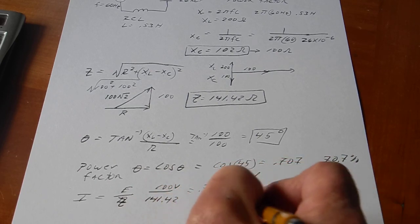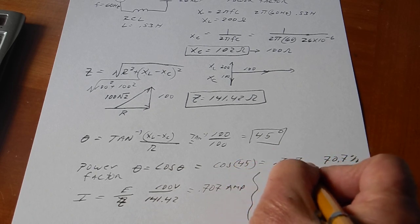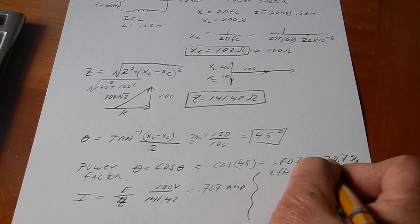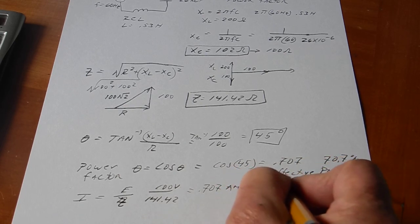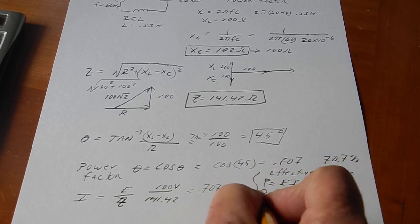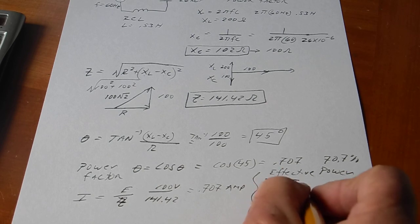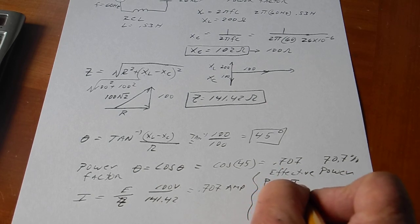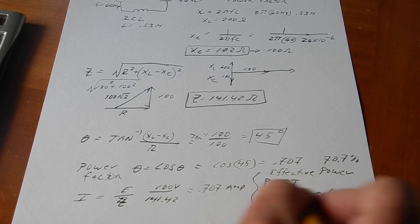And then, effective power. So, power is equal to E times I. But since we're not in phase, power effective is E times I times the power factor, which is the cosine of theta.